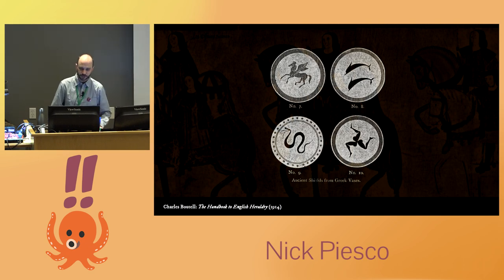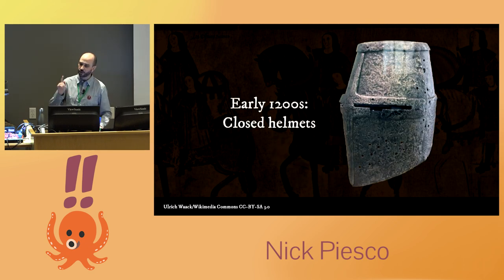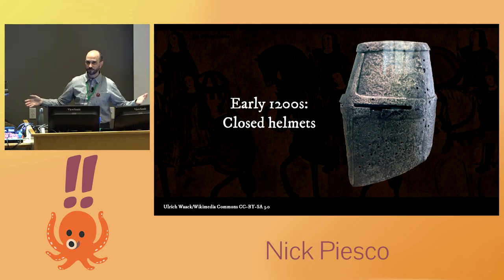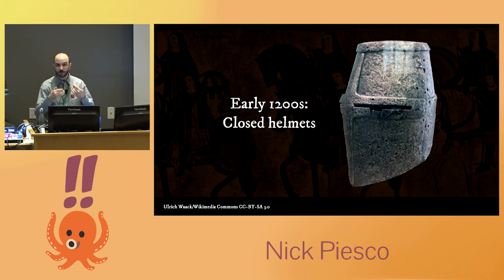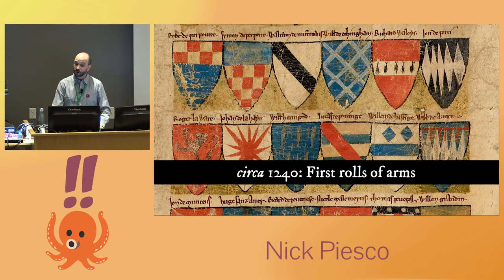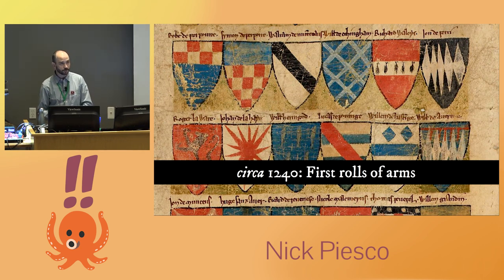We continue that decoration theme, but we don't really see that one-to-one relationship until the early 1200s, thanks to closed-face helmets. You've got a bunch of people lined up in front of you in coats of armor and you can't see their faces. If they can use a different shield every day, how are you really going to know who's who? So heralds — hence the term heraldry — were the people in charge of organizing tournaments, so it was only natural that they'd be the ones to keep track of who bears what arms. We start seeing the first rolls of arms — the list of who bears what arms — around 1240.